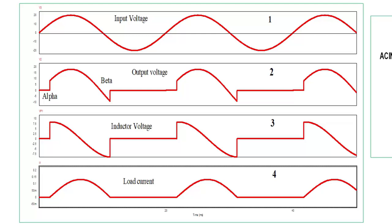As we know, a thyristor conducts if anode is connected to positive supply, cathode to negative supply, and gate current is available. So here, from zero to pi, positive input voltage is there across the SCR. Now at alpha, gate current is applied, then from alpha the thyristor will start conducting. As soon as thyristor is on, output voltage equals input voltage — assuming voltage drop across the thyristor is zero — so output voltage will follow exactly the same pattern as input voltage while it is on.